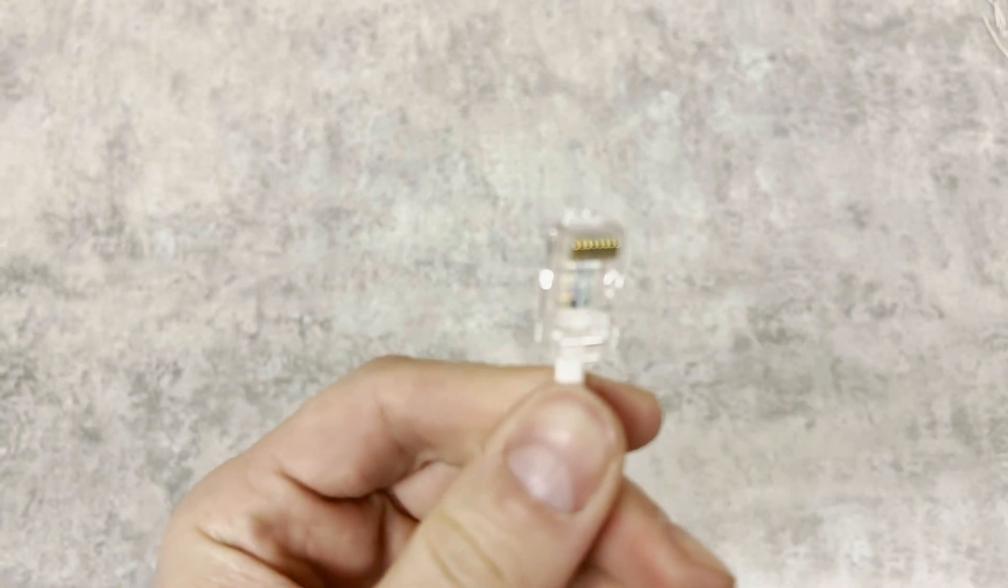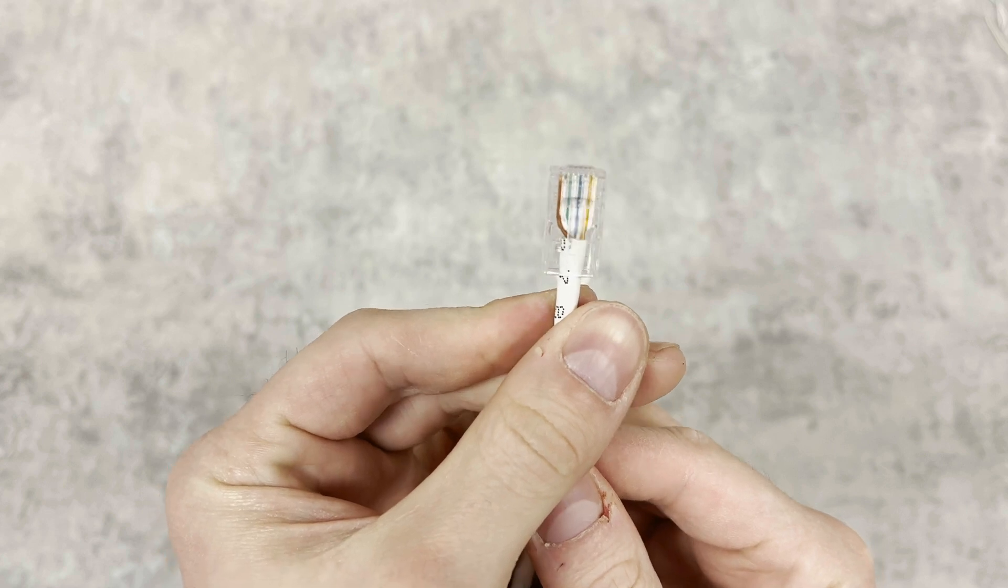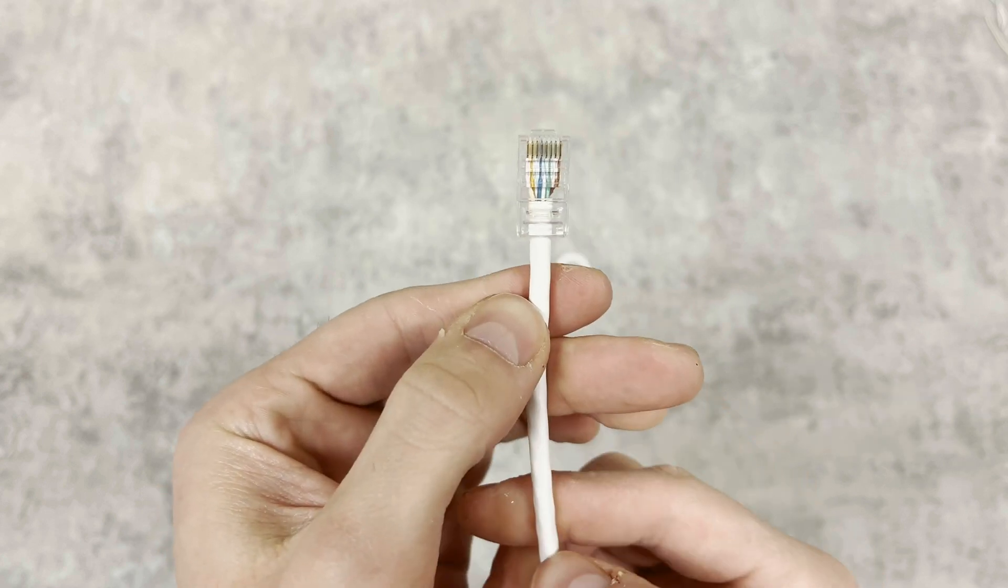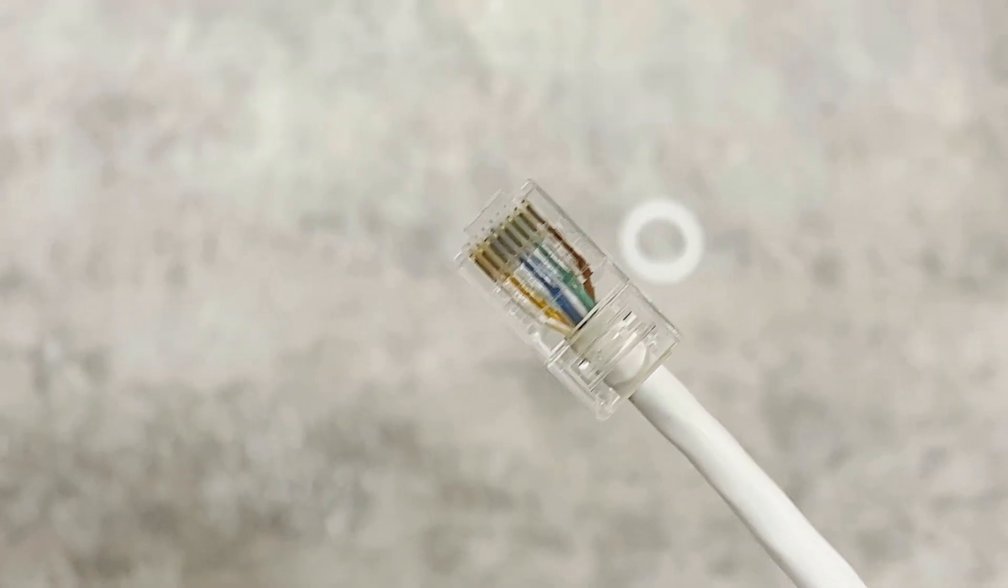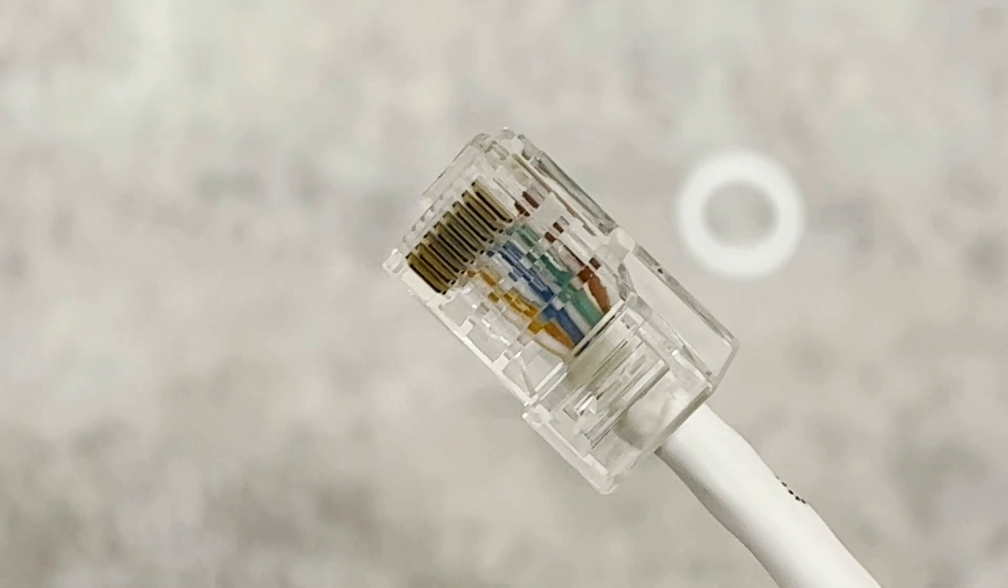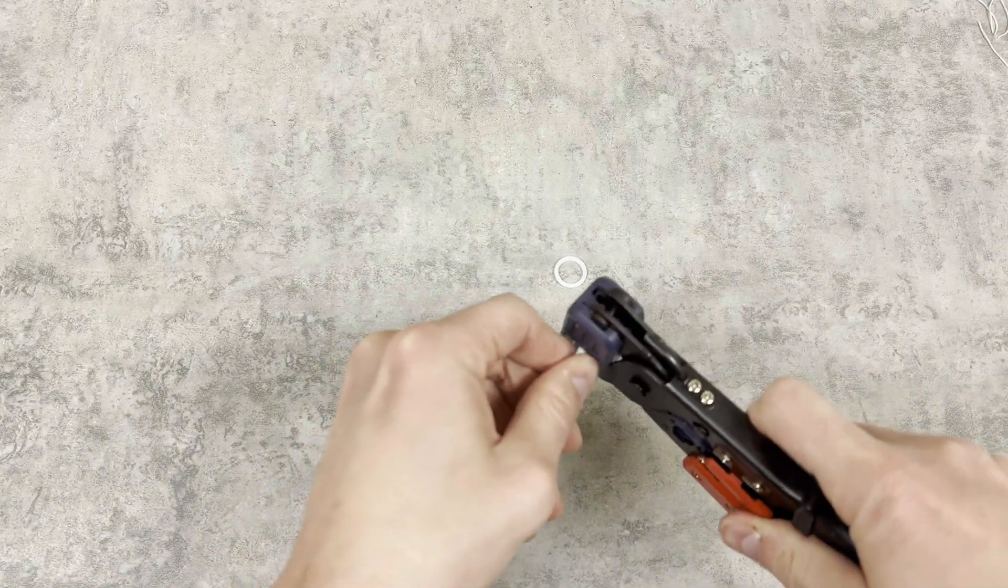These connectors are a one-time use, so if you make a mistake you will need to cut the end off and try again. Fortunately, these connectors are inexpensive and they can be found almost anywhere. You can purchase them straight from us or grab them from a home improvement store. If everything looks good, go ahead and crimp the connector down.